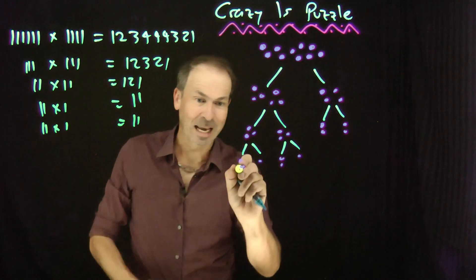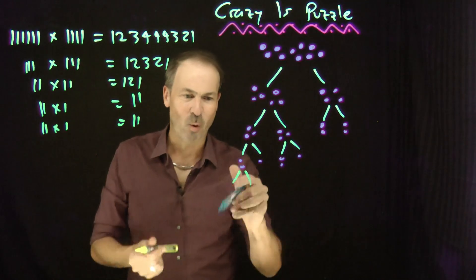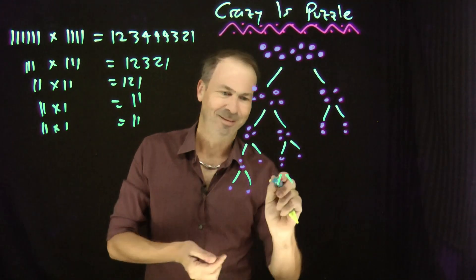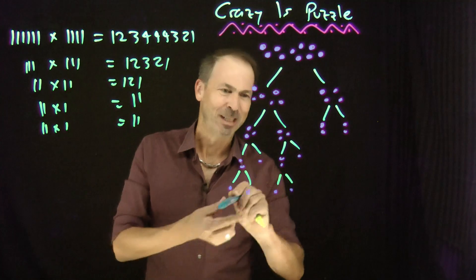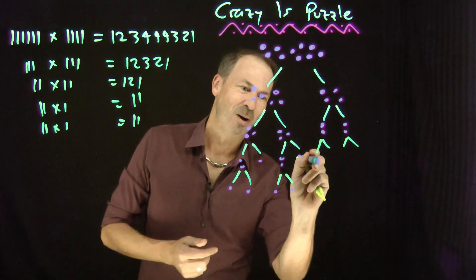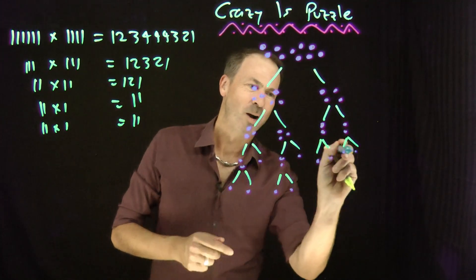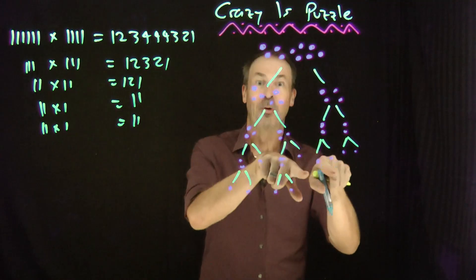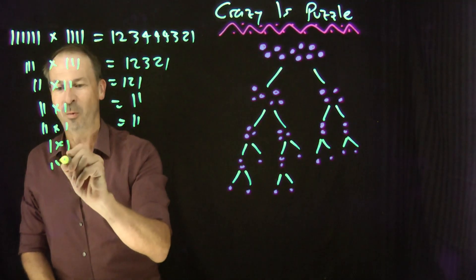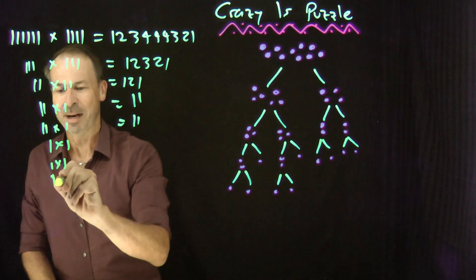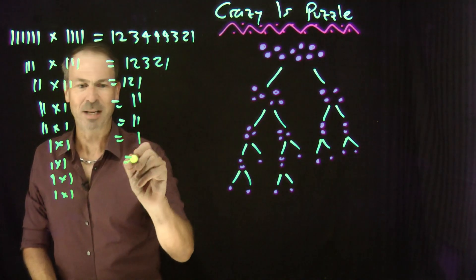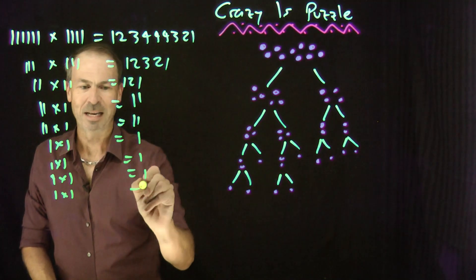Keep splitting. I've got some 2s here. That can split into a 1 and a 1, and the others too. So I've got pairs of 1s: 1 and 1, 1 and 1, 1 and 1, 1 and 1. Each equals 1 times 1 is 1.